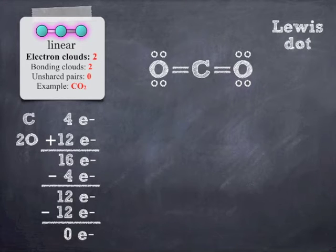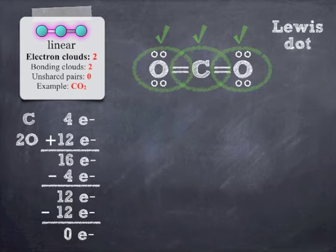And so it will take a pair and give it to each of the oxygens. Now remember, carbon still gets credit for those, but now so does oxygen. So that's going to get oxygen to six, and it's going to get, well, it's going to get oxygen to eight each, and the carbon to eight.